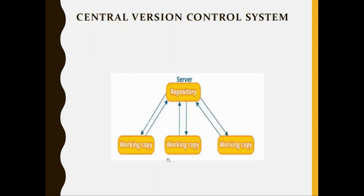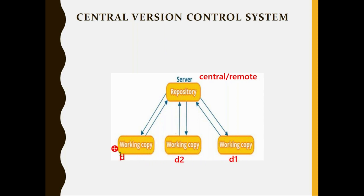Coming to the centralized version control system, you can see the diagram. Depending on the architecture, they were categorized. As per the diagram, you can see there is one central server — you may call it a central server or remote server — where all the code base is kept. Then you have different workstations, which are the working copies of different DevOps persons or developers.